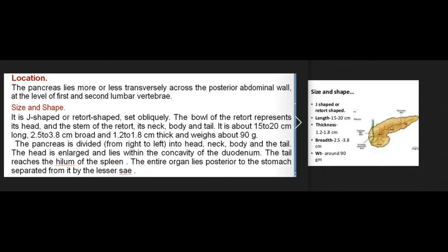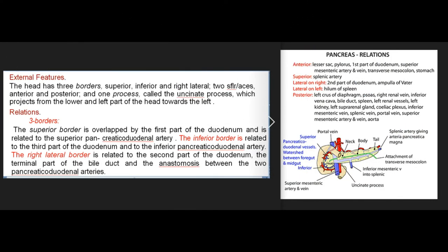The head is enlarged and lies within the concavity of the duodenum. The tail reaches the hilum of the spleen. The entire organ lies posterior to the stomach, separated from it by the lesser sac. External features: the head has three borders (superior, inferior, and right lateral), two surfaces (anterior and posterior), and one process — the uncinate process — projecting from the lower and left part of the head towards the left.